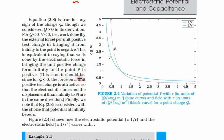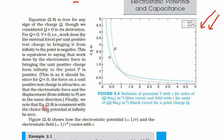Since q is less than zero, the force on a unit positive test charge is attractive. Therefore the electrostatic force and the displacement from infinity to p are in the same direction. Equation 2.8 is consistent with the choice of potential at infinity to be zero.